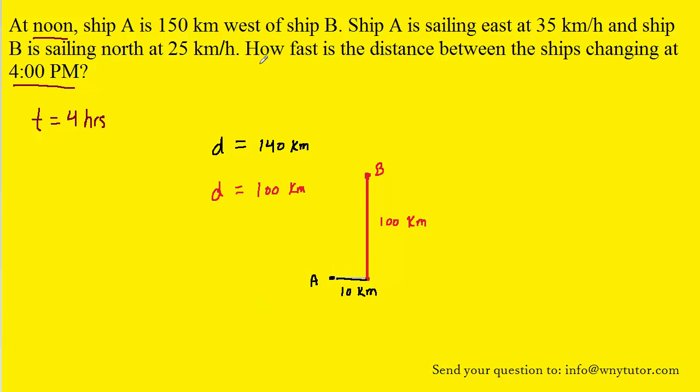We can now take a second look at the question, which asks how fast is the distance between the ships changing, the distance between the ships? Well, we can include a line connecting the two positions of the ships, and of course that line would represent the distance between them. We'll notice that the shape that we've carved out here is a right triangle. We could call the distance from B to A, which is the hypotenuse of the right triangle, C. The 10 kilometers can represent A, and the 100 kilometers can represent B.